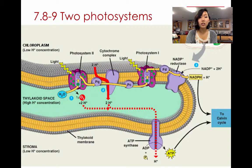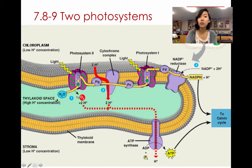And now that electron is going to continue on. When the electron continues on, water replaces the electron that was lost on that first chlorophyll A on photosystem II. And when water gets oxidized, it releases the electron and refills this chlorophyll A, and the water gets converted into oxygen. So that's what happens first.